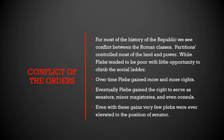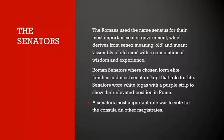For most of the history of the republic we see conflict between the Roman classes — patricians controlled both land and power while plebes were poor with little opportunity to climb the social ladder. Over time, plebes gained more rights and eventually could serve as senators, minor magistrates, and even consuls. However, very few plebes ever made it to elevated positions — only certain families inside the plebs ever made it to senator, and they kept that power. Octavian's family was one of these — we'll talk about Caesar Augustus in a few weeks.